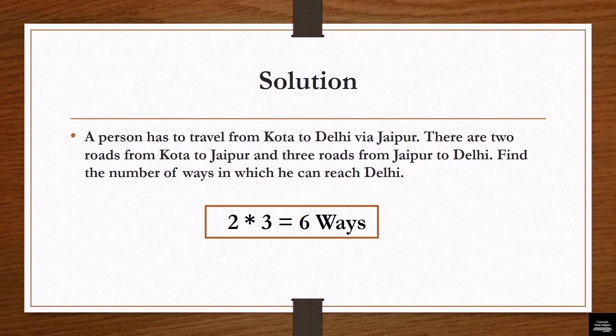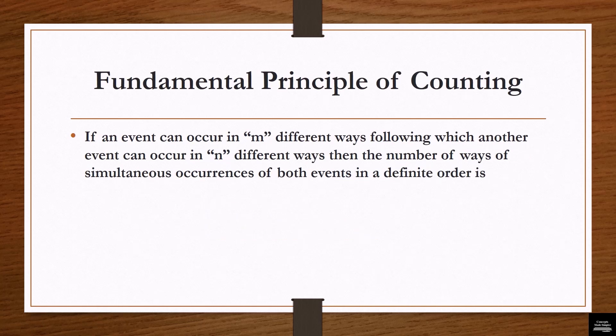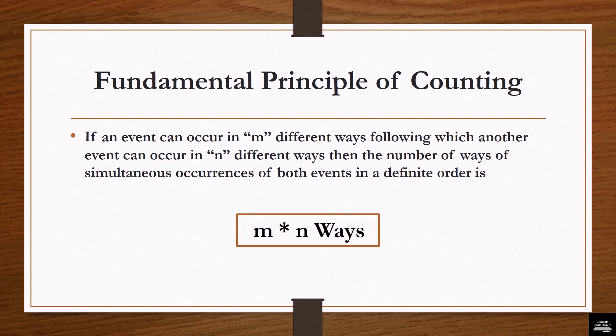Let's practice the fundamental principles of counting. If an event can occur in m different ways, following which another event can occur in n different ways, then the number of ways of simultaneous occurrence of both the events in a definite order is m × n ways. So if you have two events X and Y, where X can occur in m ways and Y in n ways, and the order is fixed, then both X and Y happening together is m × n ways.